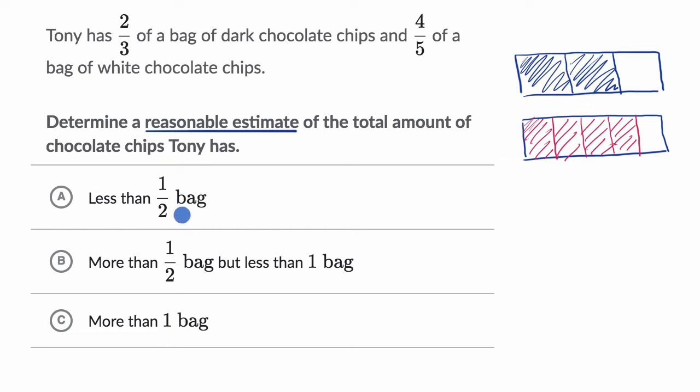Do we have less than one-half of a bag, more than one-half of a bag but less than one bag, or more than one bag? Well, when you see even the first two-thirds, where is a half? A half would have been right around there, if we're talking about half of it. So two-thirds is more than a half.